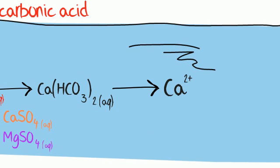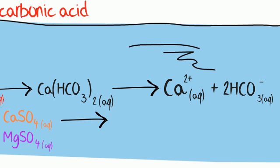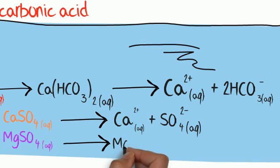As the calcium hydrogen carbonate is soluble in water, it dissolves and its calcium ions get into the water. It is the calcium ions and the magnesium ions that cause hardness in water.